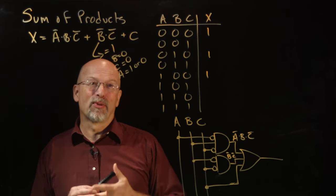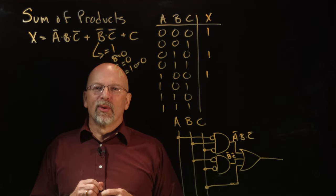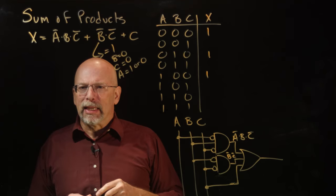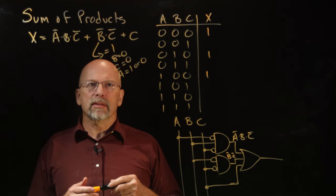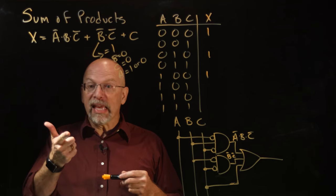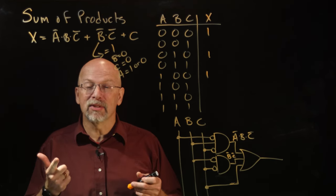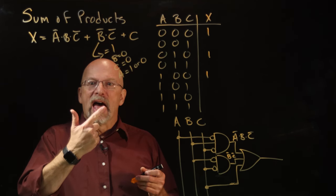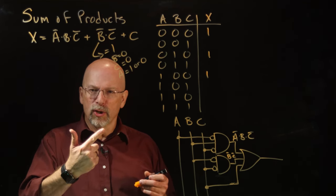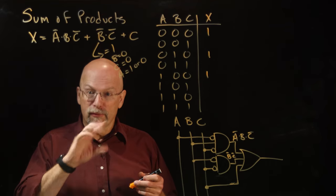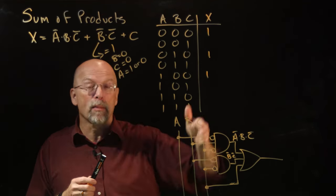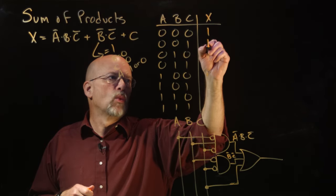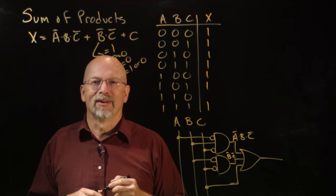What about the last product, C? C equals 1 when C equals 1. What about A and B? A can be 0 or 1, and B can be 0 or 1. Two inputs, so there are 2² = 4 possible combinations. There should be four places where this product equals 1 — and there are: 1, 2, 3, 4.